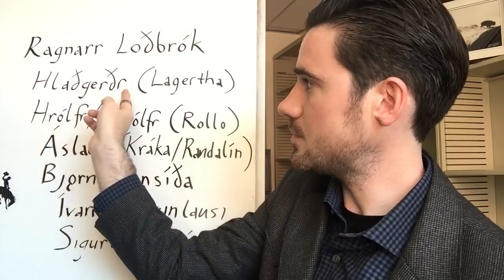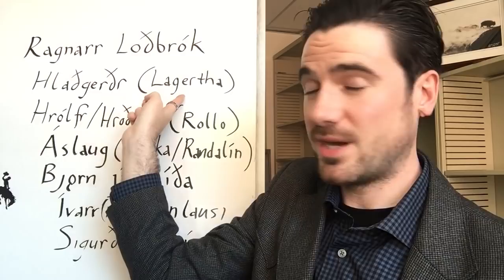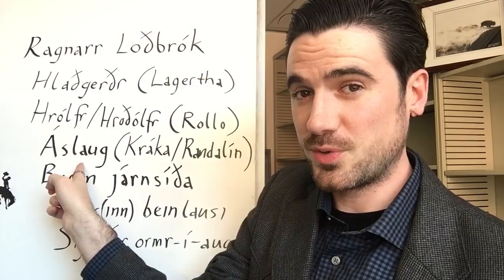One of his wives is Lagertha. But this, as I mentioned before, is a Latinized version of her Old Norse name, which is Hlaabgerðr. Curiously, the name Lagertha comes from the Latin language source of Saxo, who does not mention Oslaug, but the Old Norse sources that mention his wife Oslaug don't mention Hlaabgerðr.